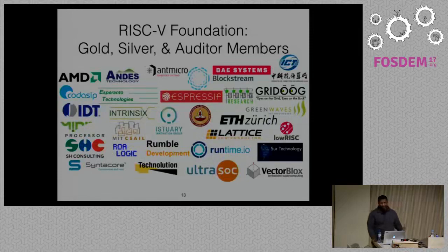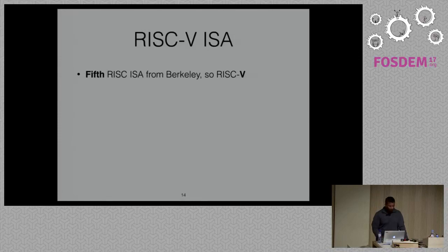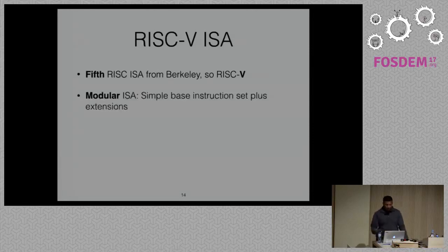RISC-V is the fifth RISC ISA from Berkeley — the earlier RISC research was done at Berkeley and Stanford in the 1980s, so this is RISC-V as in Roman numeral five. The nice thing about RISC-V is the modular ISA: it has a simple base instruction set that's fairly small, and then you can layer extensions on top of it with a base-plus-extension model. There are 32-bit, 64-bit, and 128-bit versions of the ISA.